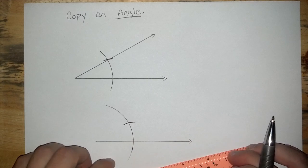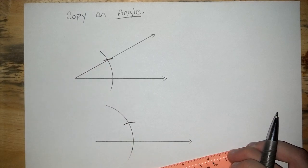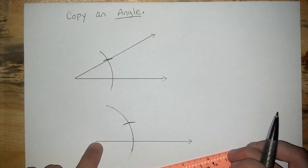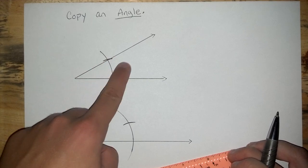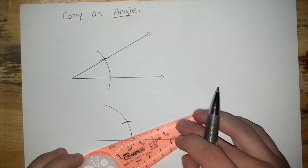Right like that. So far, our two arcs are exactly the same. Which means, if I connect the vertex through that point, just like it is up here, I'll have recreated that exact same angle right down here.